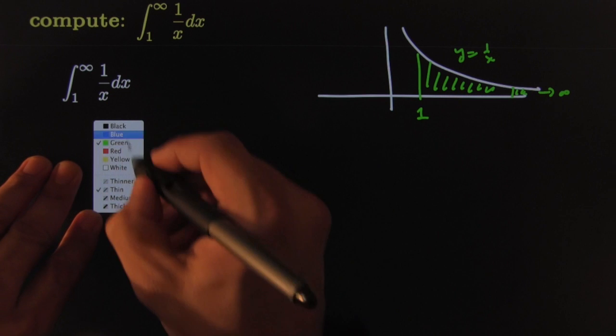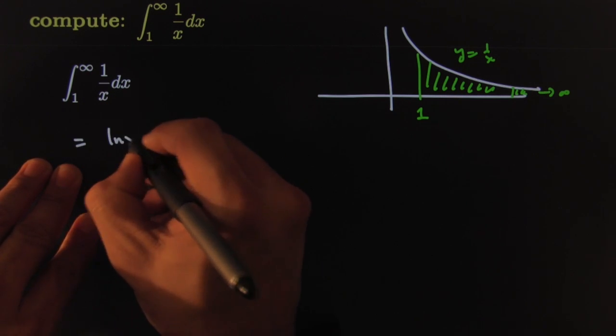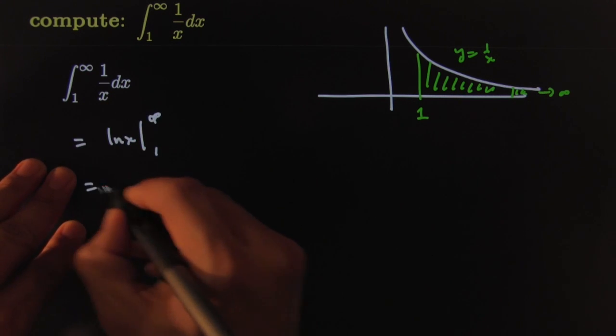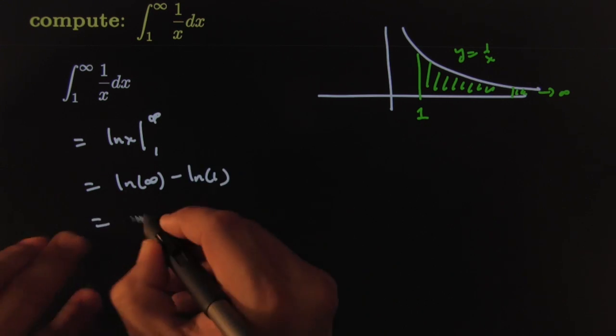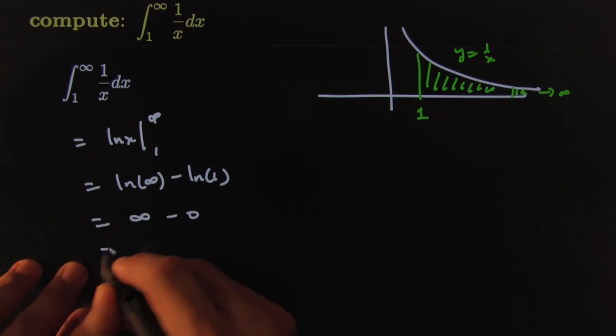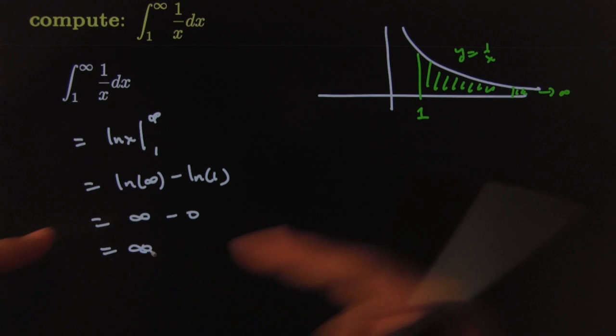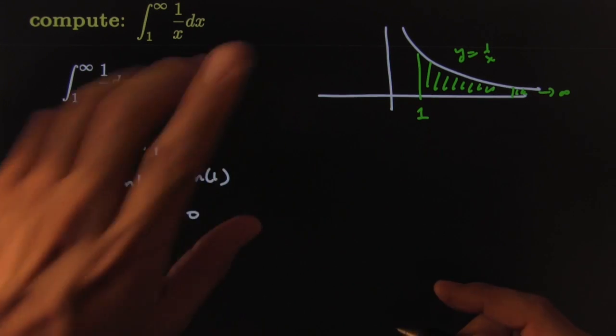The integral becomes something like this: ln of x going from 1 to infinity. That becomes ln of infinity minus ln of 1, that becomes infinity minus 0, that becomes infinity. Yippee-ki-yay! I told you some infinitely long areas like this one, even though they taper down to zero, are still infinite.